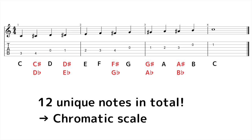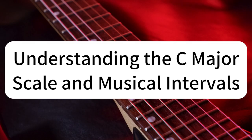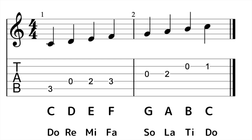Understanding this 12-note structure is crucial in music theory, and it forms the basis for everything else we'll be discussing, including scales, chords, and intervals. It's the fundamental alphabet of your musical language. With our 12 musical notes in mind, let's understand how they are systematically arranged to form scales. We'll be focusing on the C major scale, one of the most frequently used scales in Western music. The C major scale consists of C, D, E, F, G, A, and B, corresponding to the Do-Re-Mi sequence we've discussed earlier.